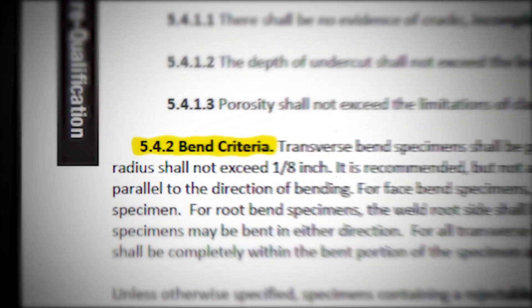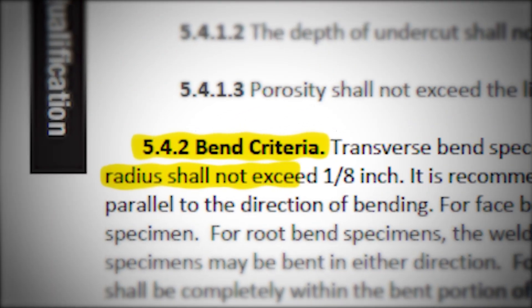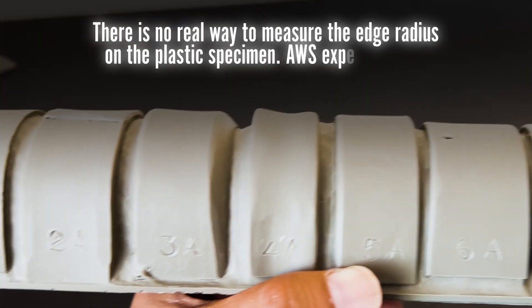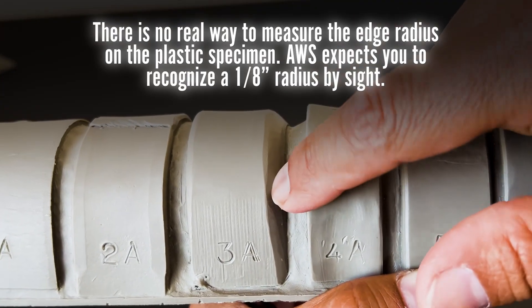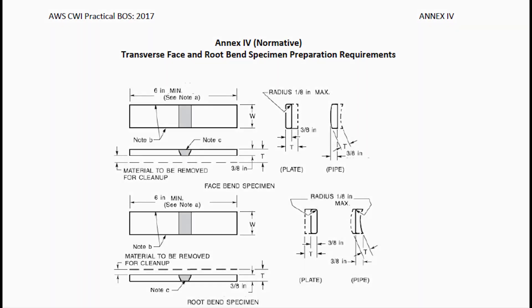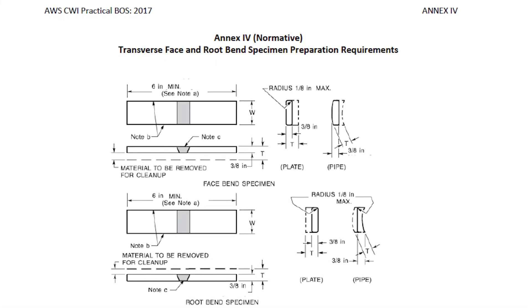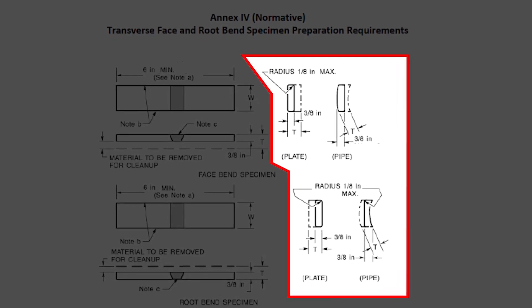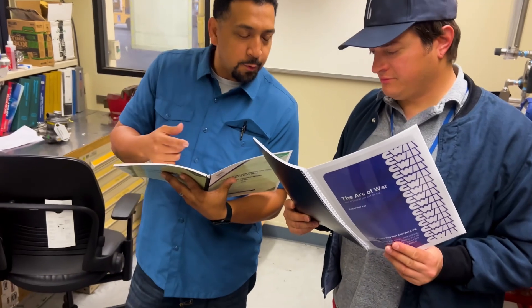For question number two, we will talk about the specimen edge radius. Per section 5.4.2, the radius shall not exceed an eighth of an inch. As you can see on this specimen, it clearly exceeds the eighth-of-an-inch edge radius criteria. You can also find more information on page 41, which displays a drawing on how the edge radius should be prepared. The eighth inch is the max. If I saw this question on the exam, I would mark this as rejected.